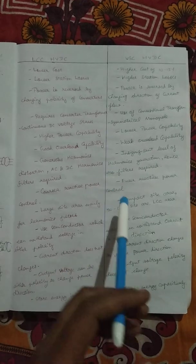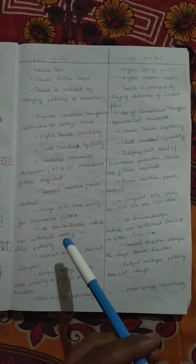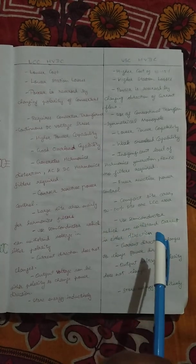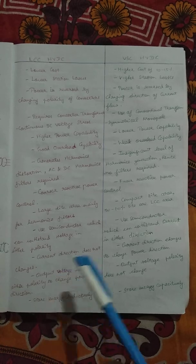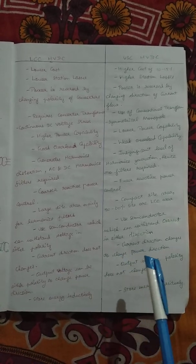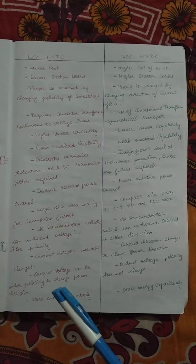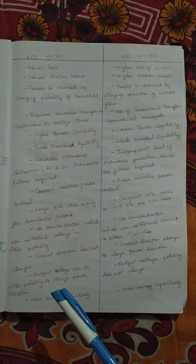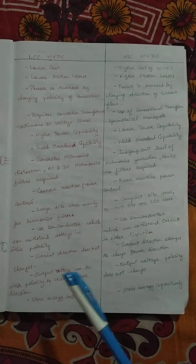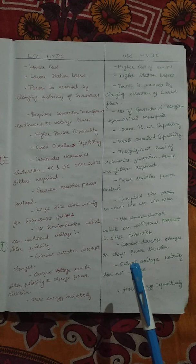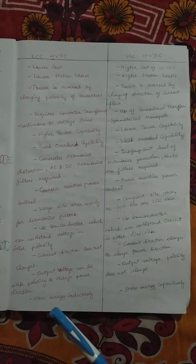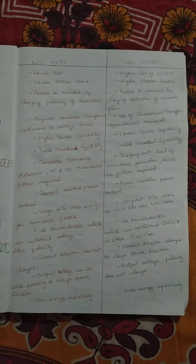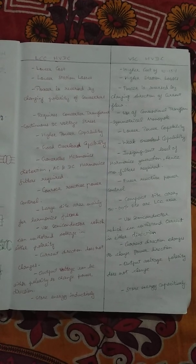LCC uses semiconductors that can withstand voltage in either polarity; VSC uses semiconductors that can withstand current in either direction. In LCC, current direction does not change to reverse power direction, whereas in VSC the current direction changes. LCC output voltage can be either polarity to change power flow; in VSC, output voltage polarity does not change. LCC stores energy inductively; VSC stores energy capacitively.